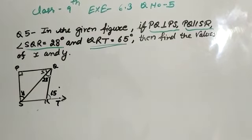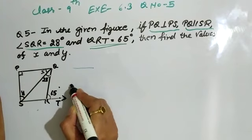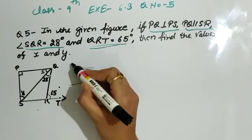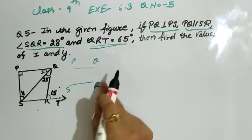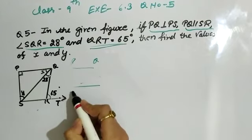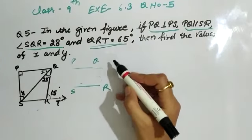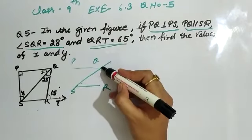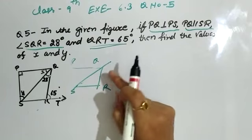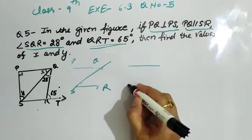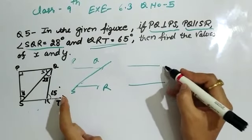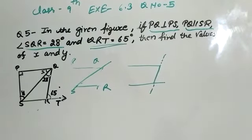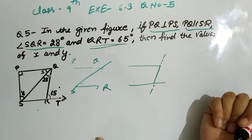First of all, when you have two parallel lines and you have a transversal cutting them — here we have points S, Q, and R. Line SQ and line QR are involved, and since PQ is parallel to SR, line QR is our transversal line.